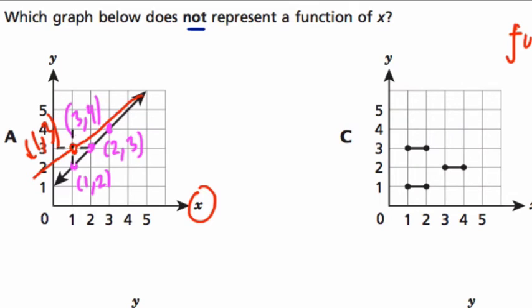So that means, essentially, that there can't be any situation on your graph where if you go up, let's say if you draw a vertical line, a straight up and down line, it's called a vertical line test. If it crosses your graph more than once, that means that your input has more than one output, and it's not a function.